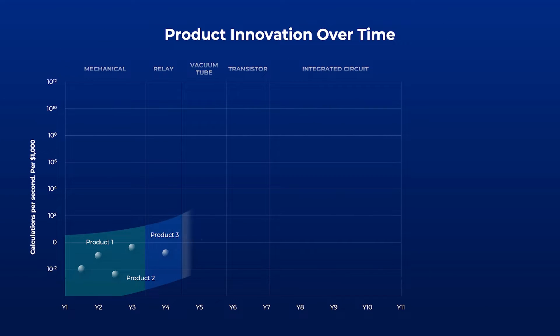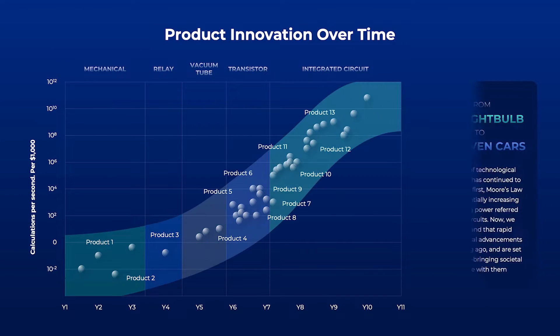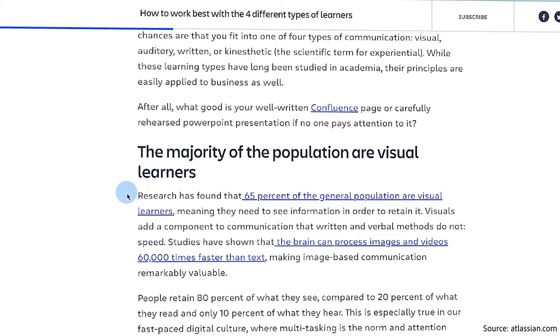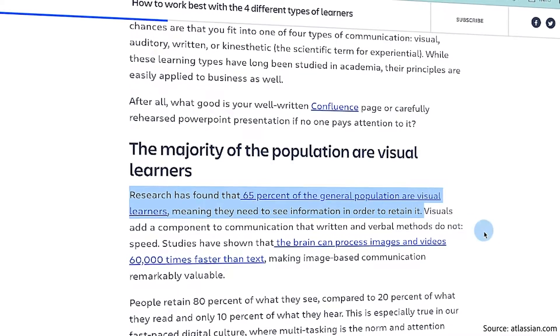In fact, here's a data point: 65% of people are visual learners, so don't underestimate these graphics. Now, let's have a look at some of these examples.